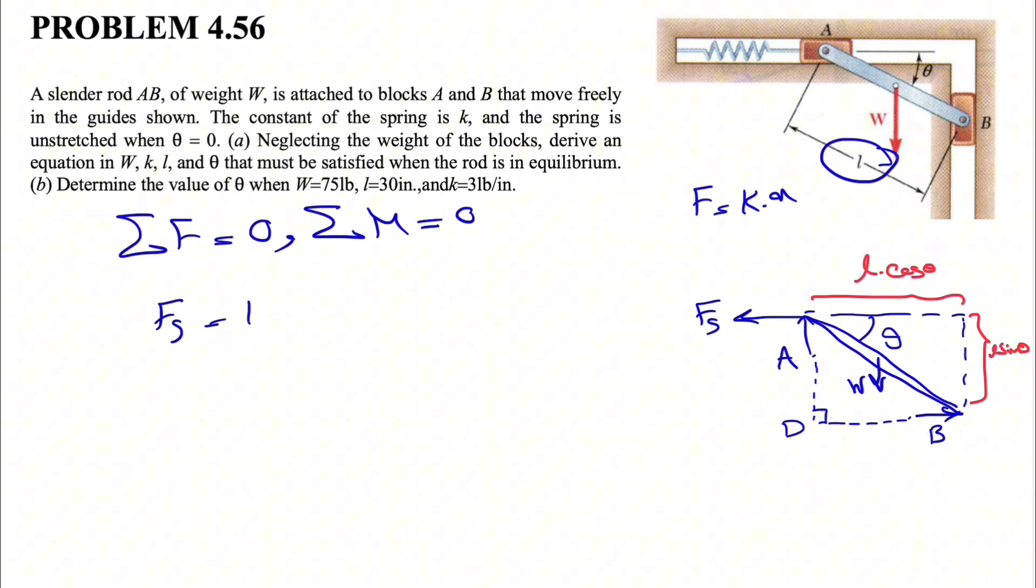We have the constant times the displacement of the spring. When theta is zero, we will have this rod AB, which is L. And when we have theta like something that is not zero, the length of the displacement of this spring, which is in horizontal direction, will be L cosine of theta. So this will be our displacement for this spring, which we call X. If we want to find X,